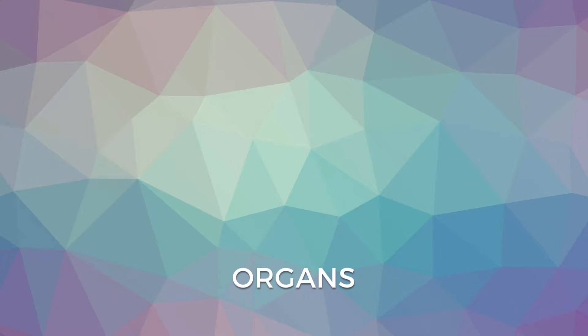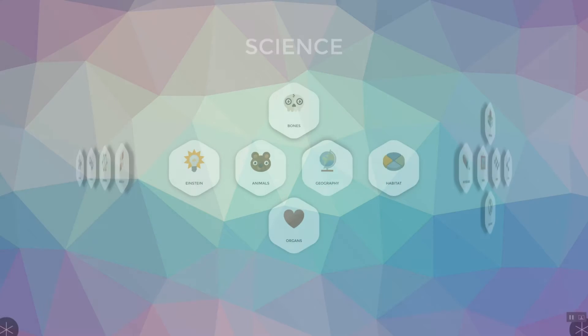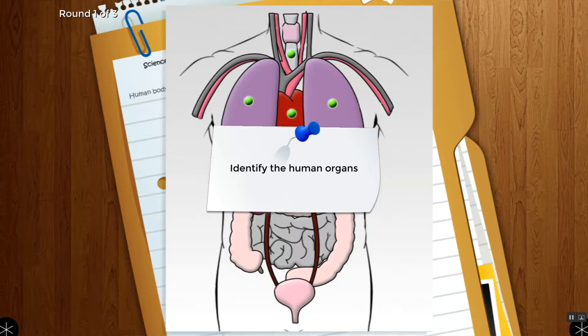Organs is another app that is good for use during instruction about the human body, and like the Bones app, supports one, two, or more students working simultaneously on a large display in front of class or tabletop mode. Select the organs icon in the science menu to open it. Directions are given at the start of each of the three rounds.